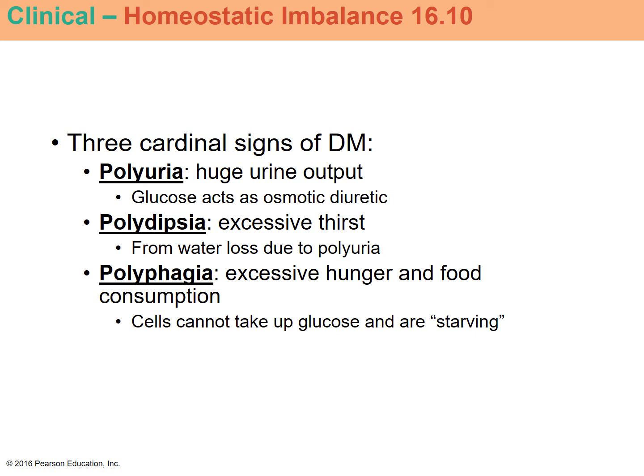There are three main signs of diabetes. Polyuria is huge urine output — glucose acts as a diuretic, increasing water in the urine, producing very dilute, frequent urination. Losing a lot of water through urination triggers the thirst response to prevent dehydration. Polydipsia, excessive thirst, is the second sign — the body is trying to maintain water levels but struggling.